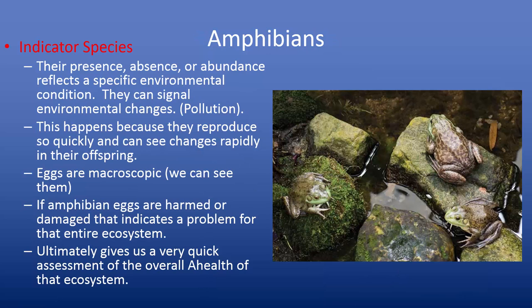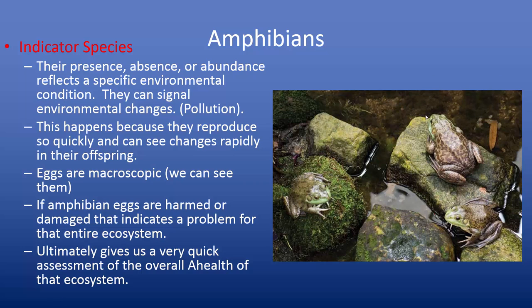Amphibians are a very important species — what we call an indicator species. Their presence, absence, or abundance reflects a specific environmental condition and can signal environmental changes like pollution. For example, look at these frogs. They should be a bright green color, but instead their bodies are a dark brown, which is an indication of pollution in this particular water source. Amphibians are a good indicator species because they reproduce so quickly, so we can see changes rapidly appear in their offspring — this is only a couple of generations into the pollution taking hold in this ecosystem.